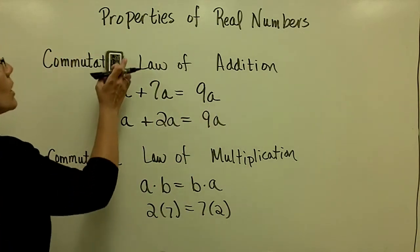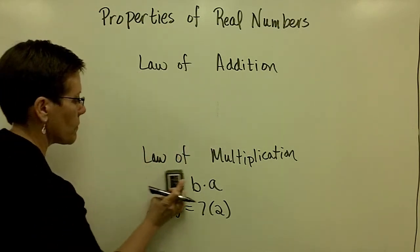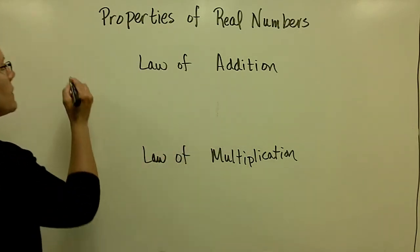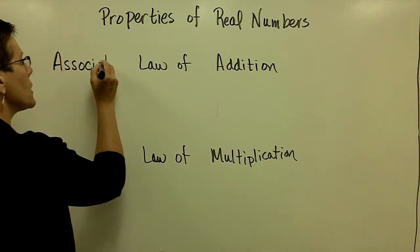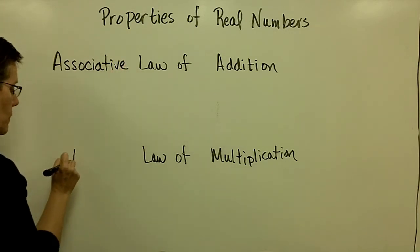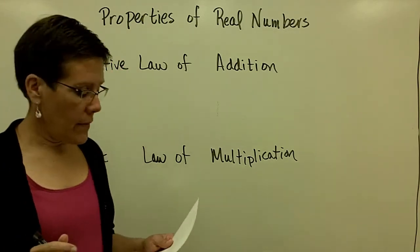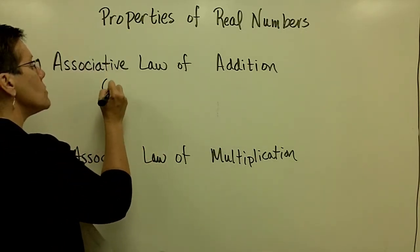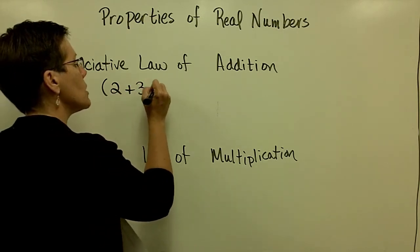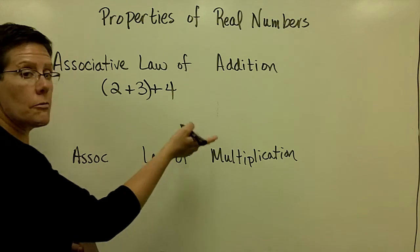The next law is called the associative laws of both addition and multiplication. They say that if I have three or more numbers that are grouped, and I'm just going to use a numerical example here. If I have 2 plus 3 and 4 and I'm adding them together but I've grouped the 2 and the 3,